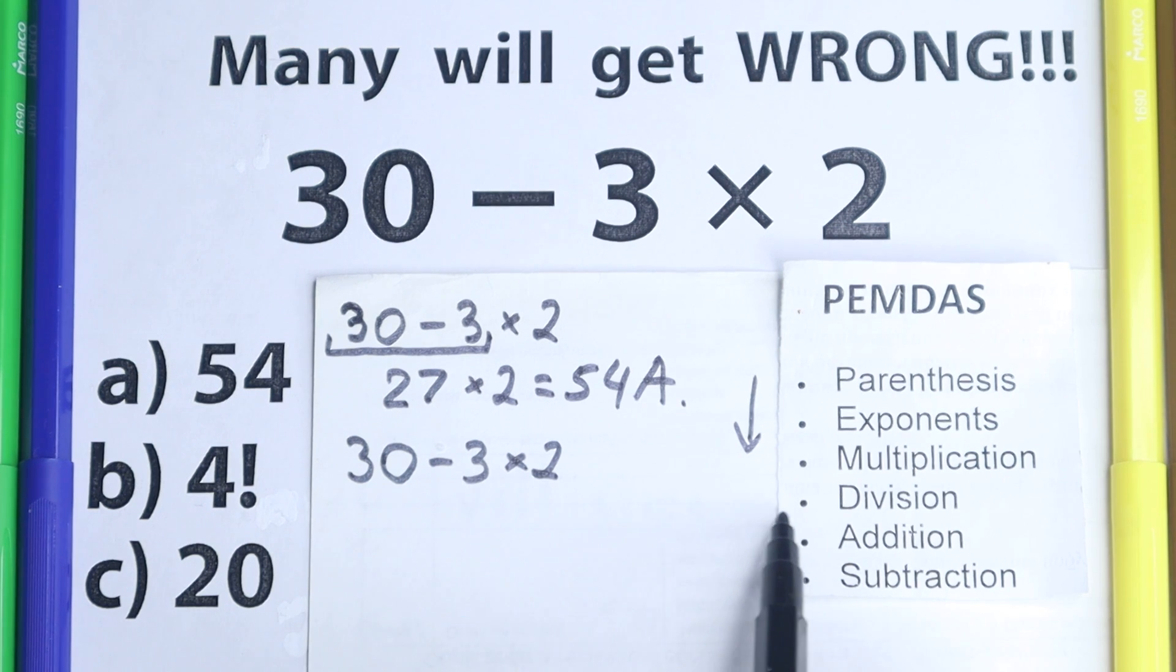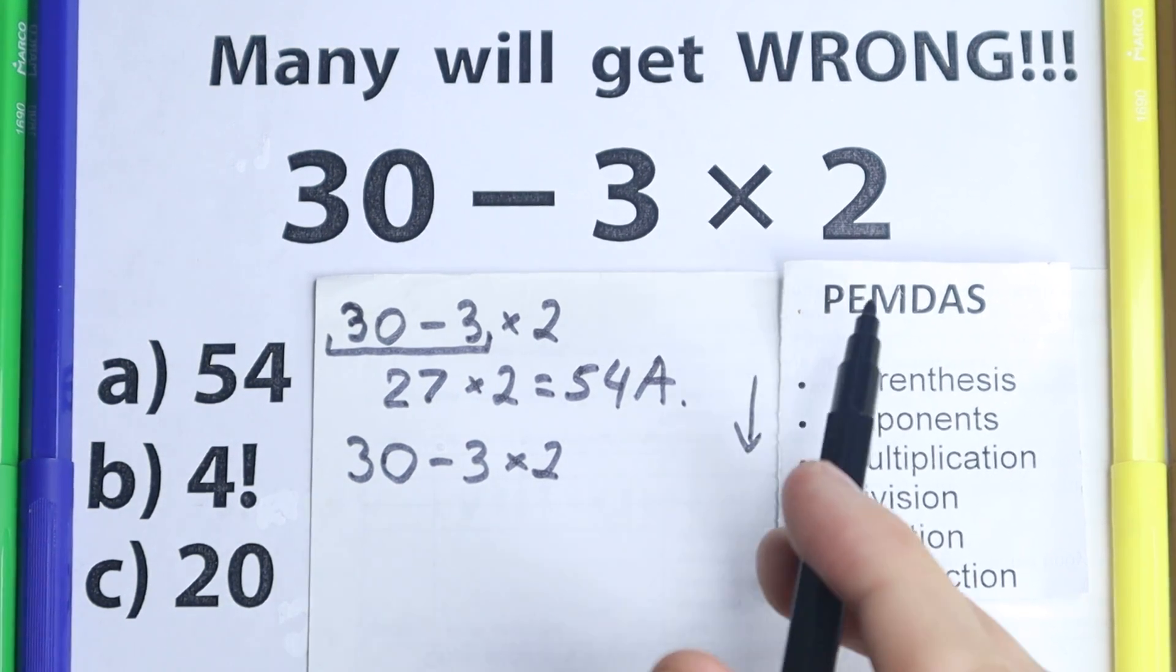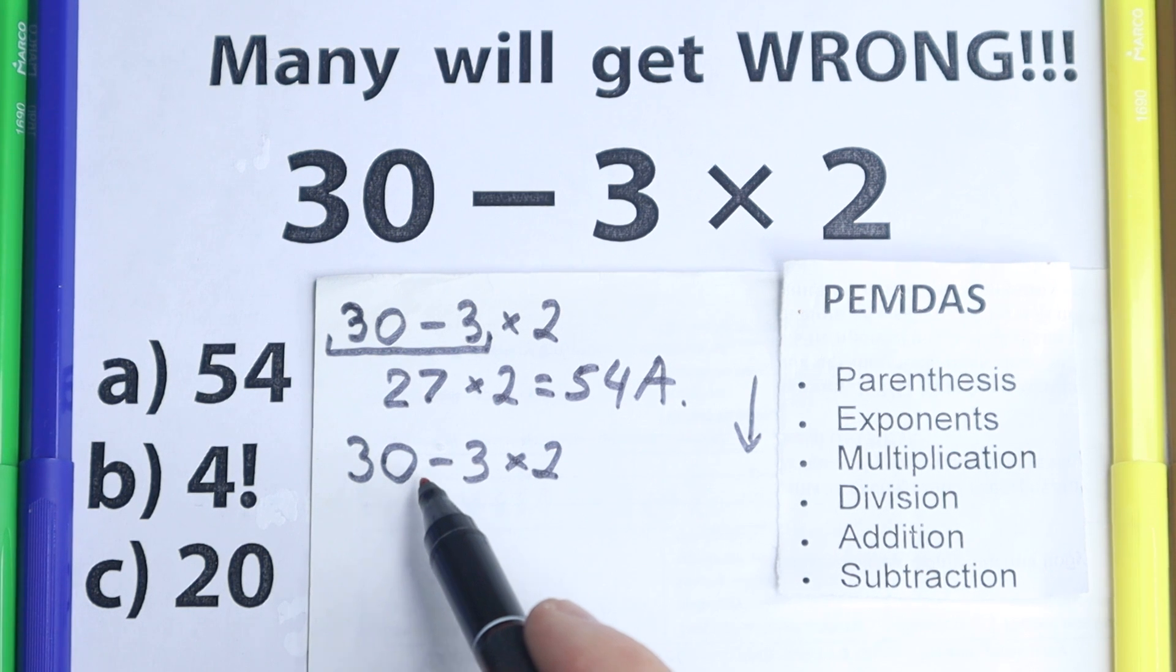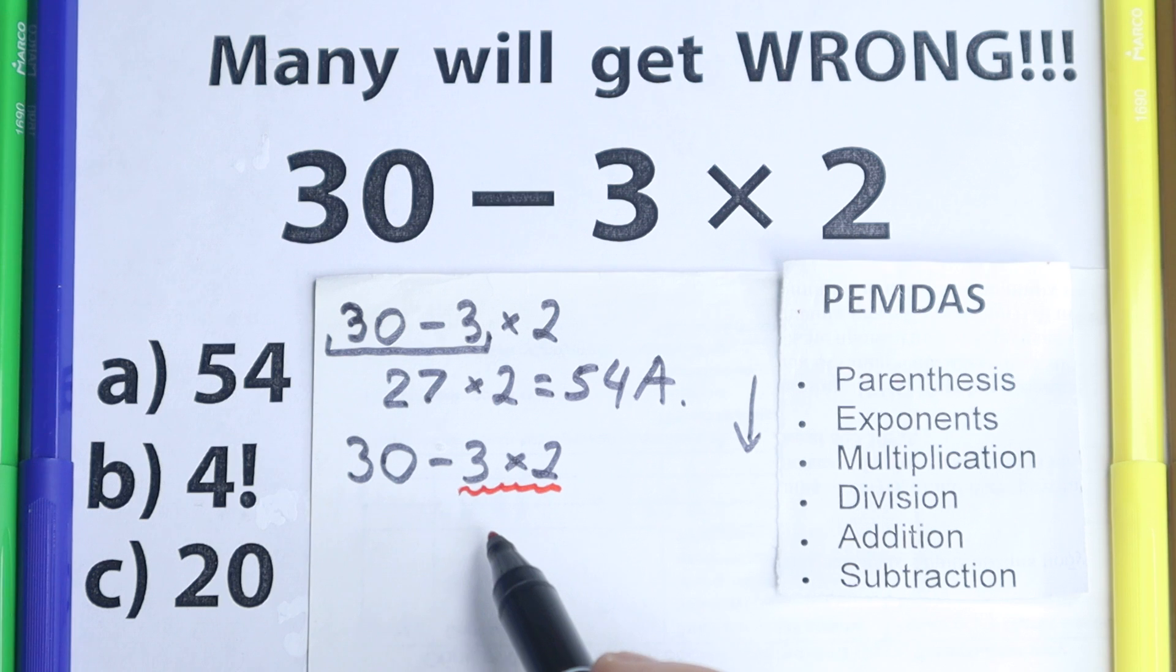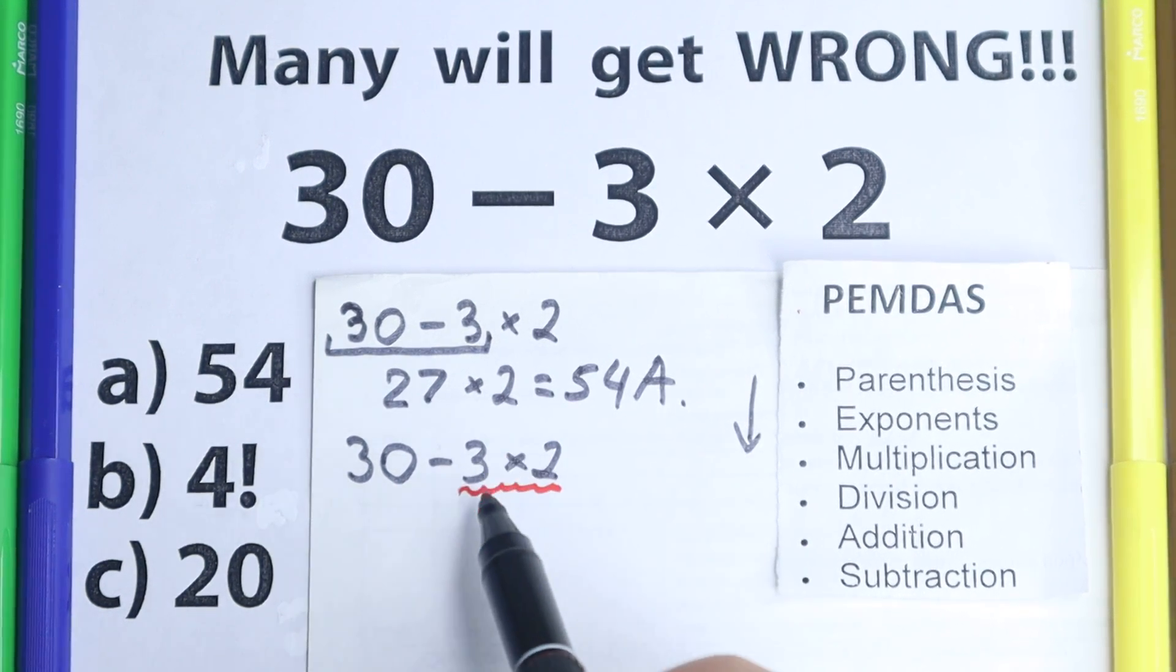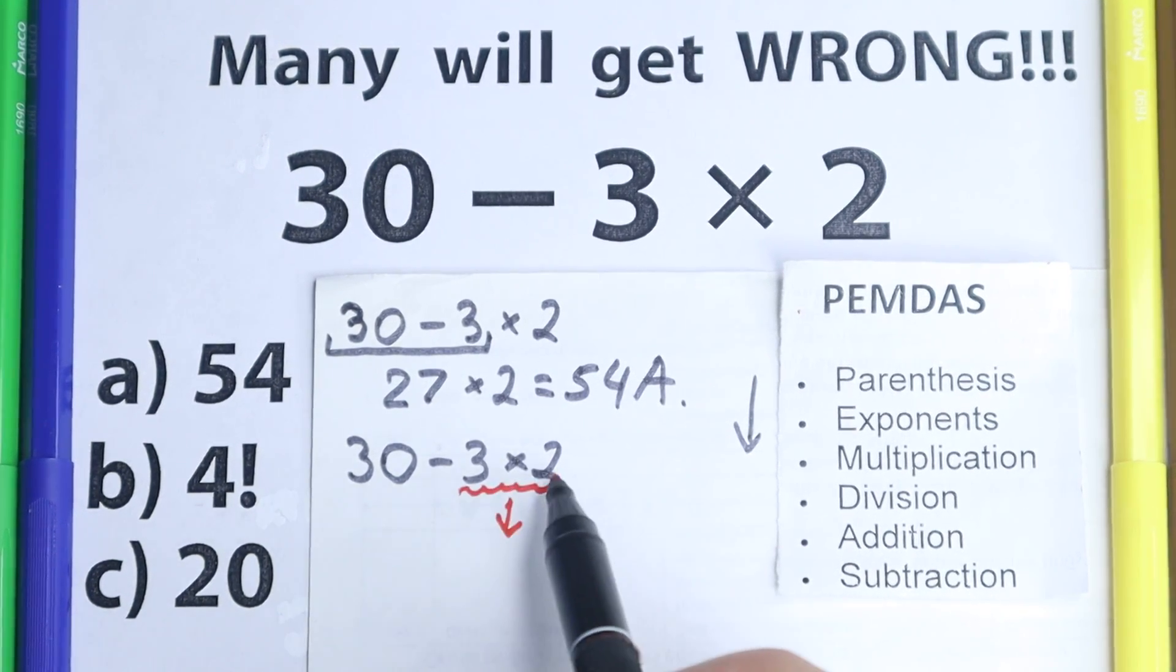Let's go to the next step. The next step according to PEMDAS is multiplication and division. And let's look at our question, are there any multiplication and division signs right here? Right here, subtraction. We have a multiplication sign right here. So we need to know that multiplication is before subtraction. Multiplication and division all the time is before addition and subtraction. So 3 times 2 equals 6.